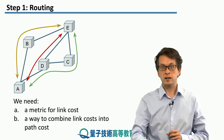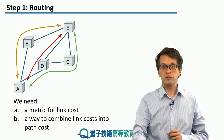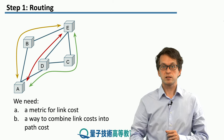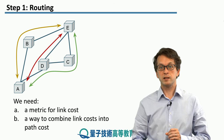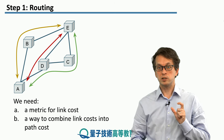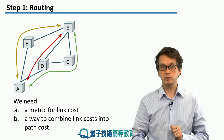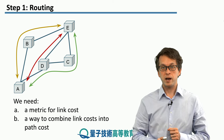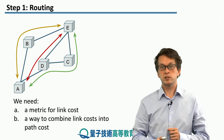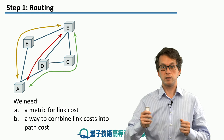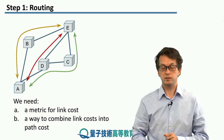What we need in order to evaluate which path is best is to look at the cost of establishing link-level entanglement, and then how to combine these costs to obtain the cost for the entire path — the full end-to-end entanglement.